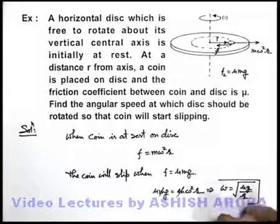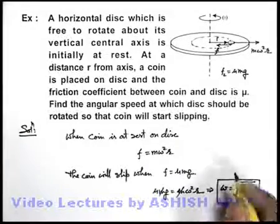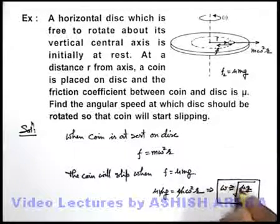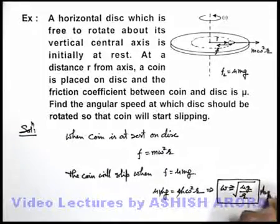So this is the angular speed which is required to slip the coin, or we can also say angular speed is more than or equal to this value the coin will slip. That is the answer to this problem.